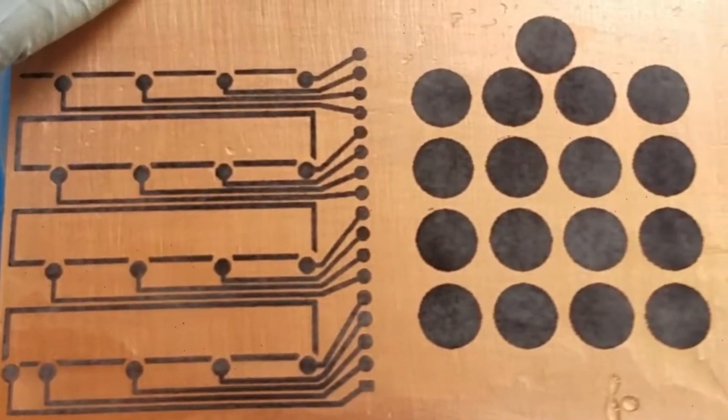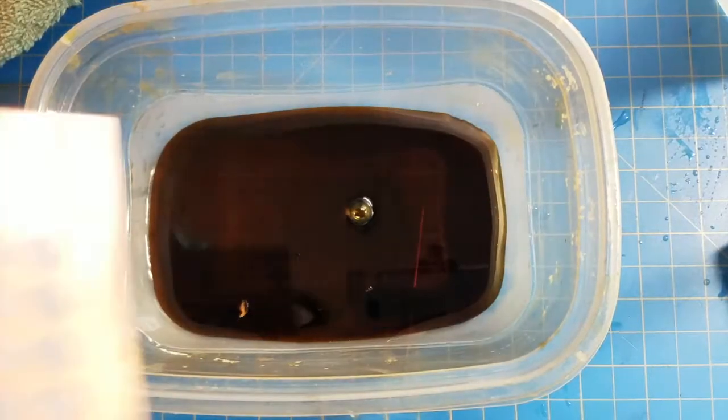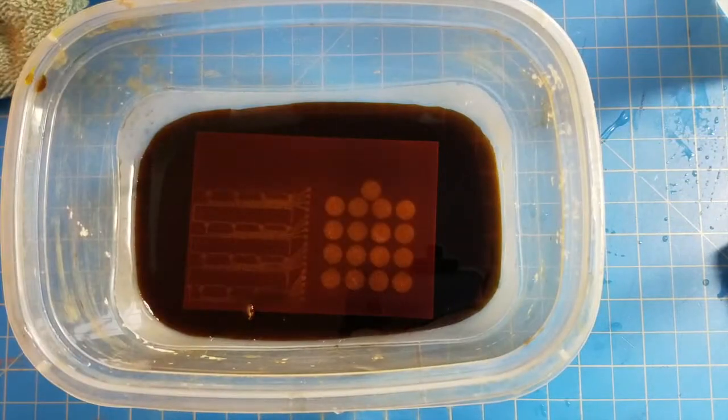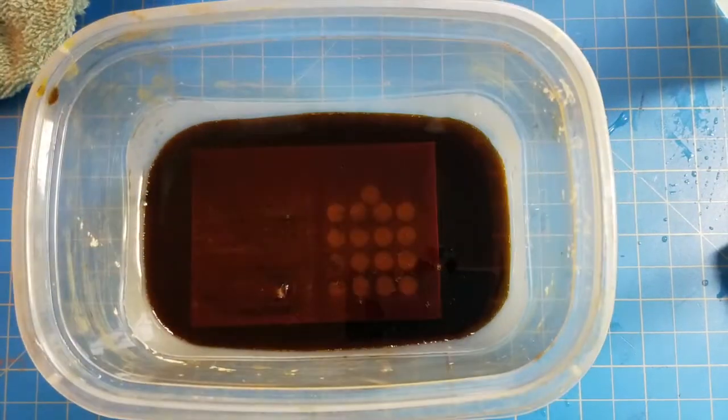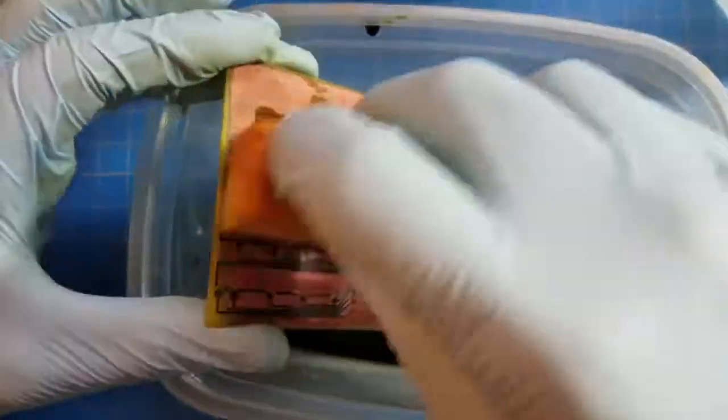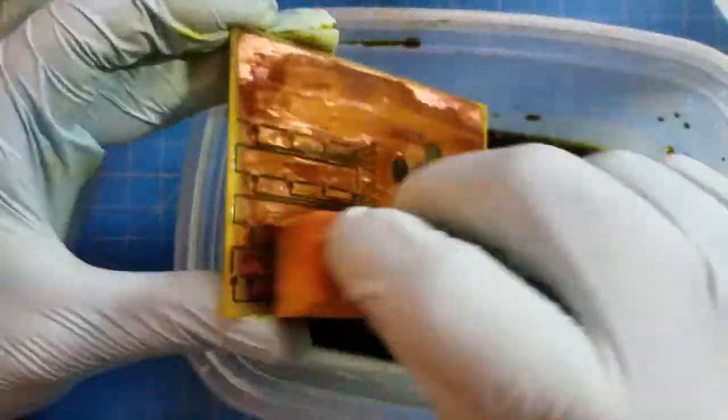There you go, you're all ready to start etching. Drop it in your ferric chloride acid bath and let it sit for about 10 minutes. Agitate every two minutes, just shake it around a bit.